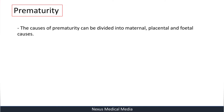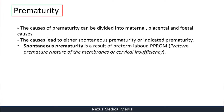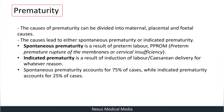The causes of prematurity can be divided into maternal, placental, and fetal. These causes lead to either spontaneous prematurity or indicated prematurity. Spontaneous prematurity results from preterm labor, preterm premature rupture of membranes, also known as preterm pre-labor rupture of membranes, or cervical insufficiency. Indicated prematurity results from induction of labor or cesarean delivery. Spontaneous prematurity accounts for 75 percent of cases, indicated for 25 percent. Prematurity is idiopathic in about 40 percent of cases.